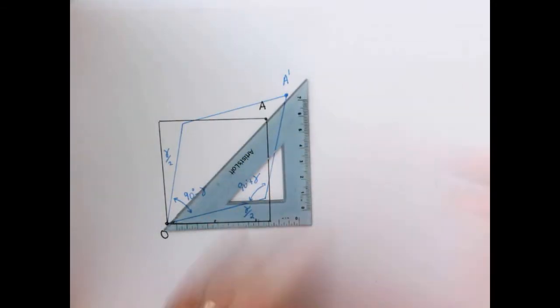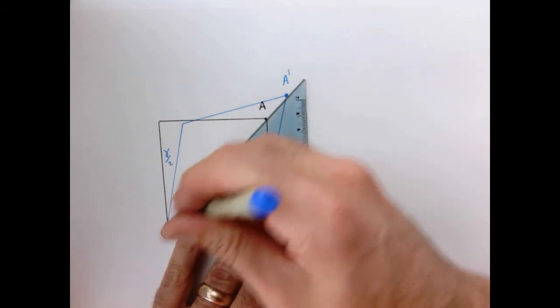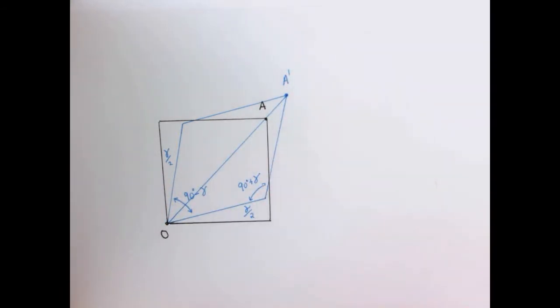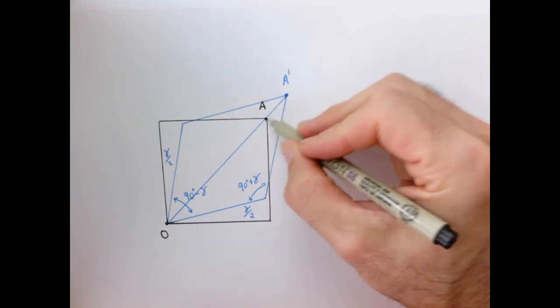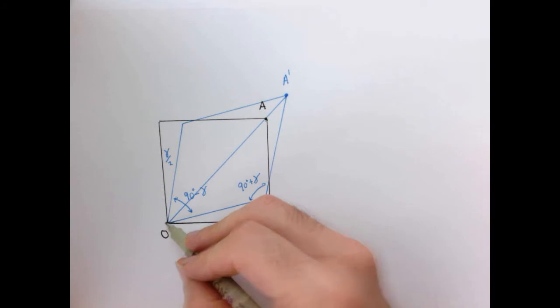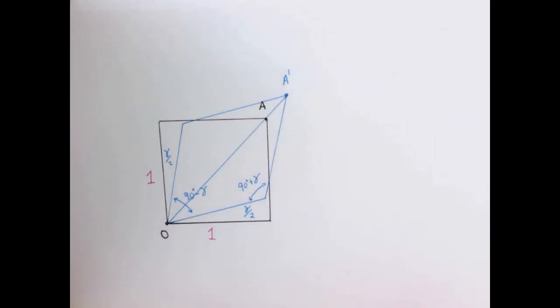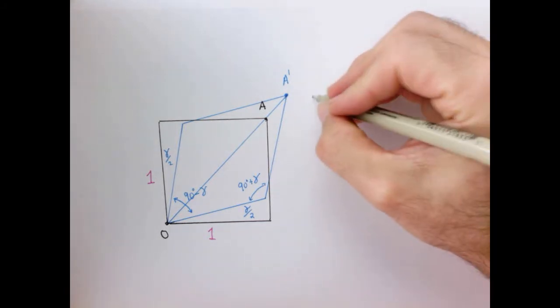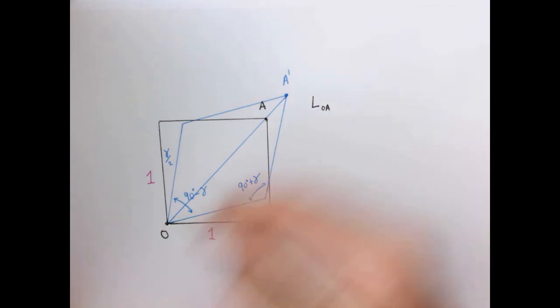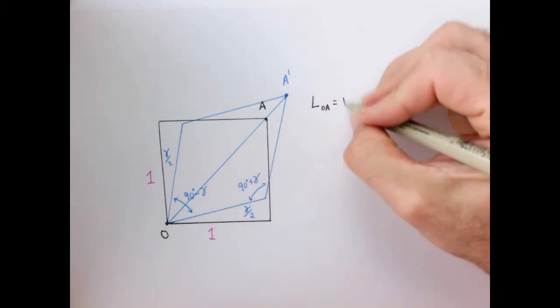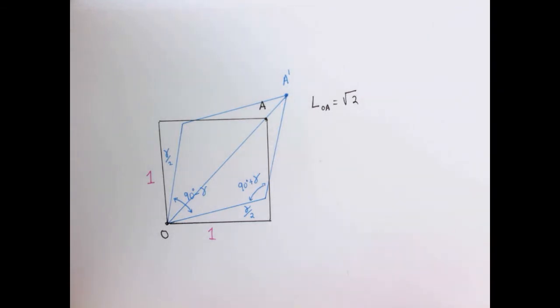Let's find the distance from point O to point A prime. To compute the strain of this line, we need to figure out what this distance is, how far that point has moved. Let's start by computing the distance from O to A. That's pretty easy because we just have a square here. For simplicity, let's assume our square, whatever unit of measure we're in, is length one. That means the distance, the length of line O to A, is nothing more than the square root of two.